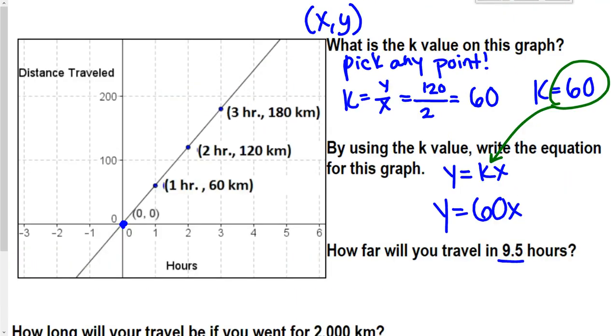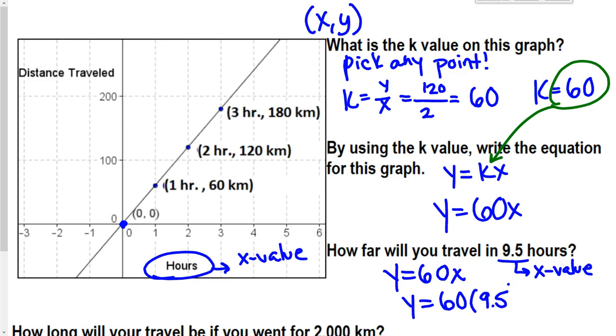So how far will you travel in 9.5 hours? Well, hours I see down here. So hours is an x value. So once I have my equation, y equals 60x, I can just say, okay, hours is an x value. So y is equal to 60 times 9.5. So y is going to equal to 570. And y is distance traveled. If I see here, here's my unit: kilometers. So 570 kilometers.